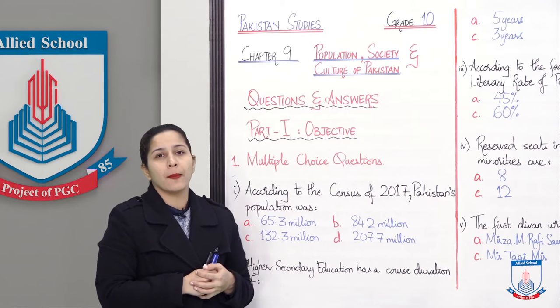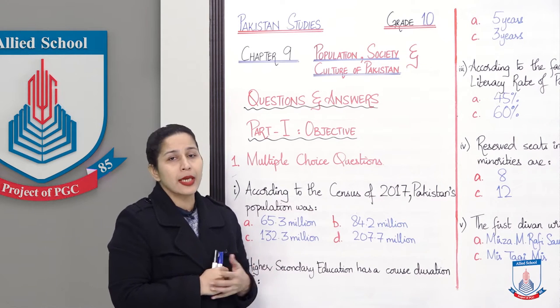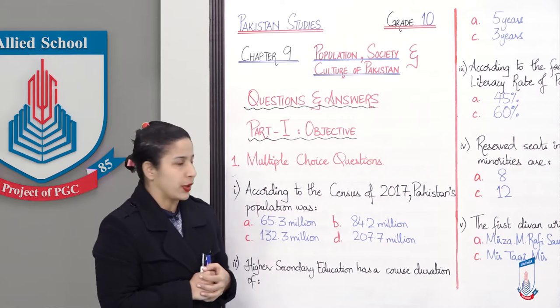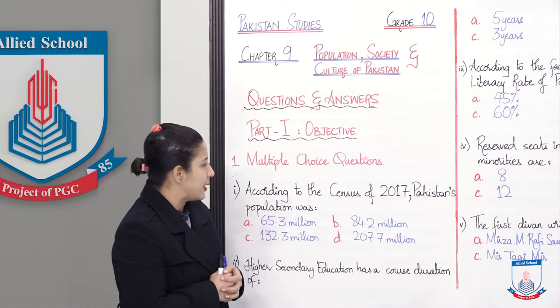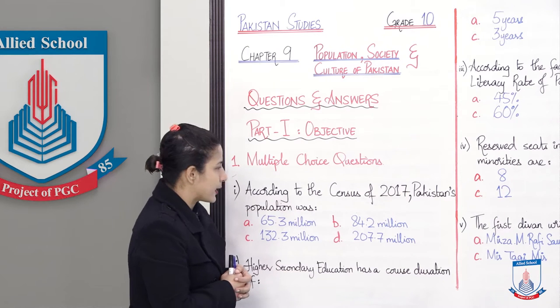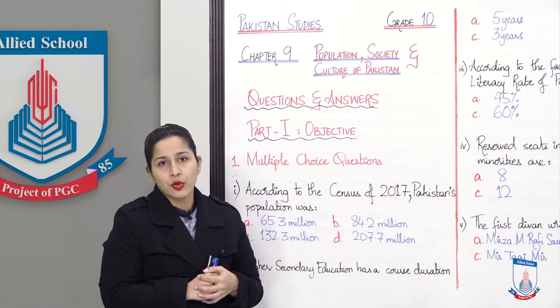Let's start with the exercise questions and answers. Part one is objective. The first question is multiple choice questions. These are the questions which have four options and you have to select the best suitable option.